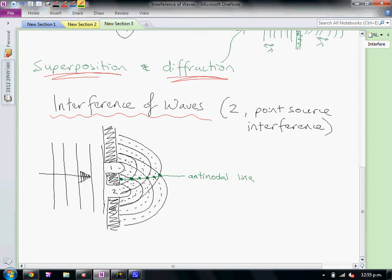If we look at a couple of points here, we can see there's another anti-nodal line here. And then another one. Passing through.